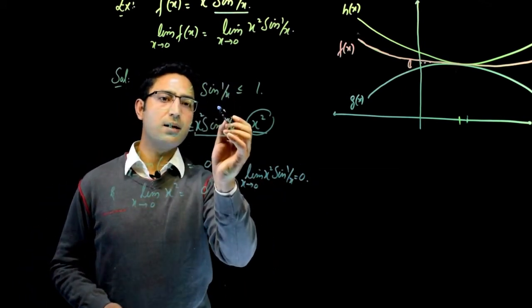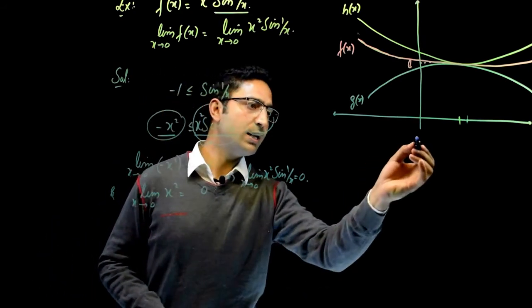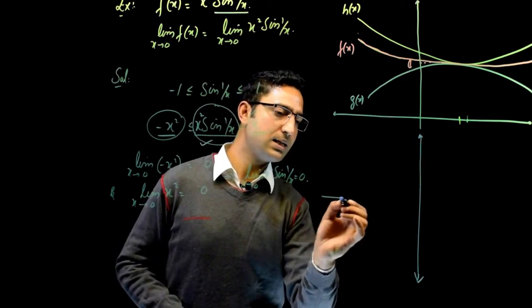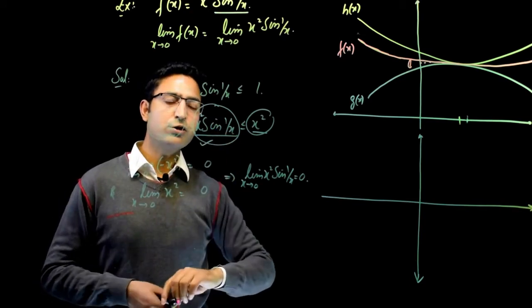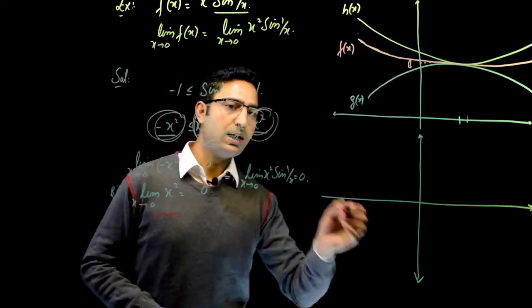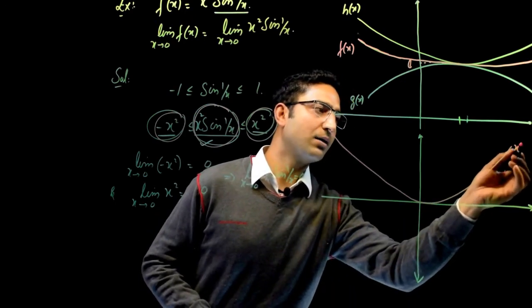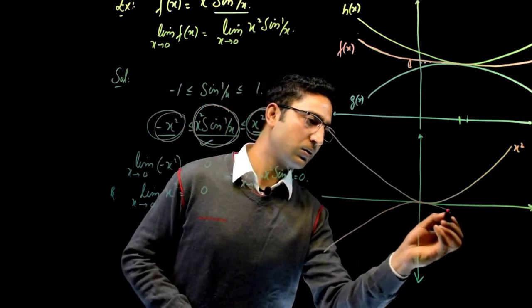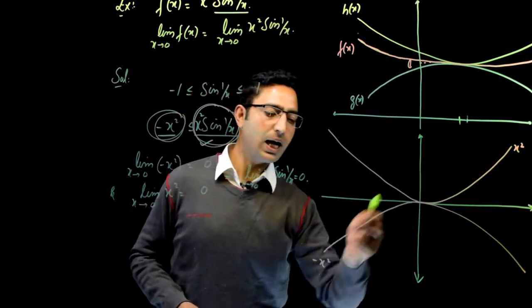Now, if we look at a graph of this x squared sine of 1 by x and see how its limit is equal to 0 graphically, then let me have the coordinate systems here. This is the y-axis, this is the x-axis. Now we see that the x squared sine of 1 by x lies between minus x squared and plus x squared. The graph of x squared is just like this, and the graph of minus x squared is just like this.